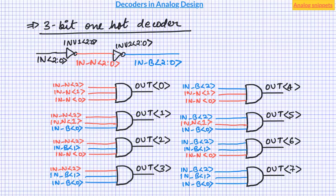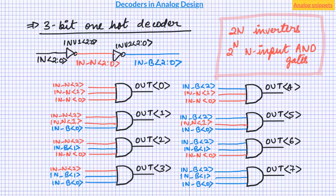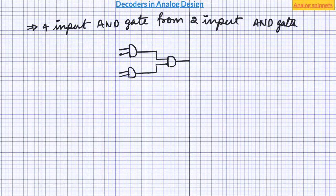So to implement n-bit one-hot decoder we need 2n inverters and 2 to the power n input AND gates. But as n becomes large, getting n input AND gates becomes difficult. But we can generate n input AND gates by cascading fewer input AND gates. For example, 4 input AND gate can be implemented using 2 input AND gates like this.